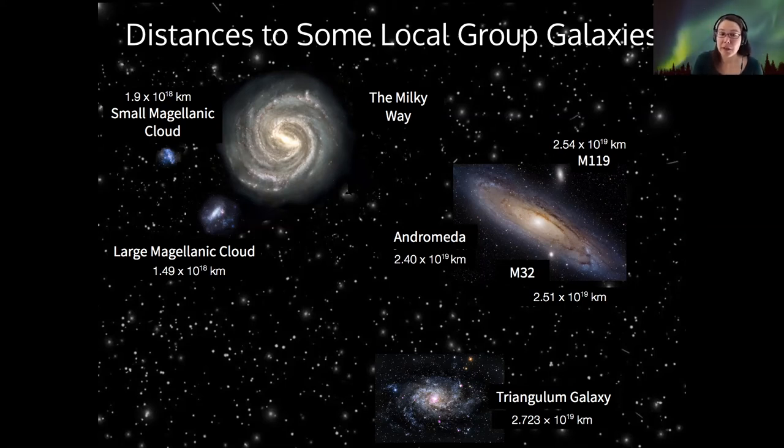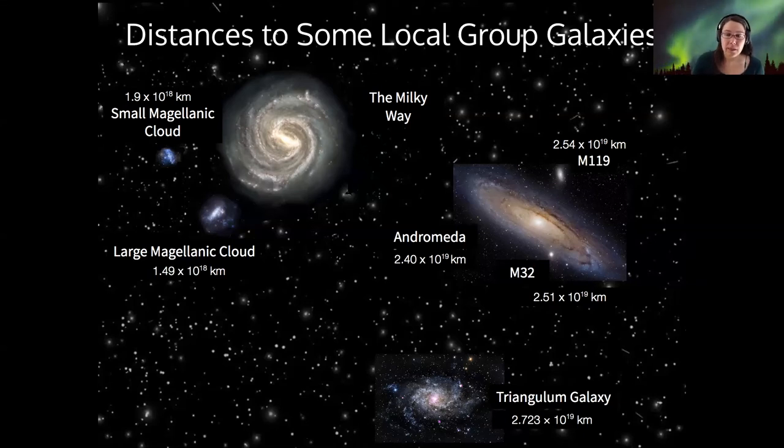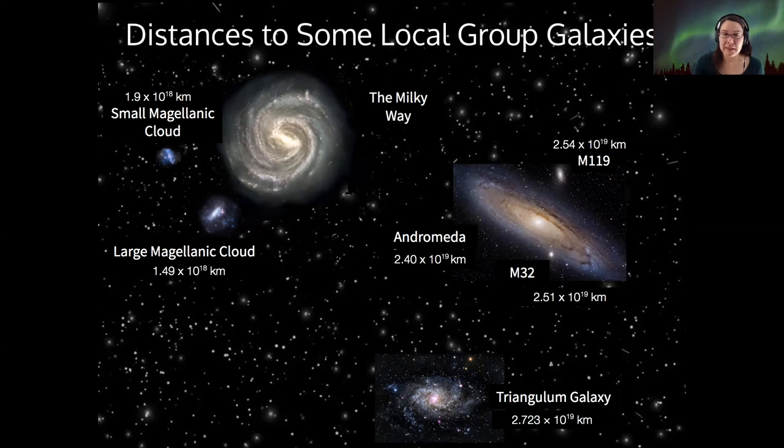So then the distance to Andromeda would be 2.4 times 10 to the 22 meters. Alright, so those are what we call SI prefixes. I think that today's activity has a table of those, but if not there's an appendix in the book that talks all about it or they're easy to find online.